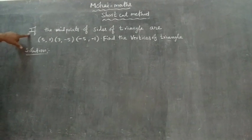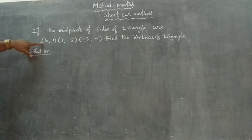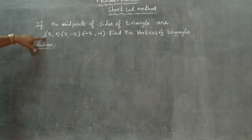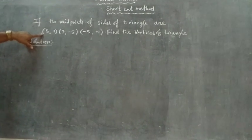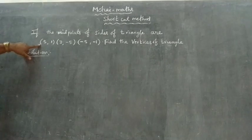The midpoints of the sides of the triangle are (5,1), (3,-5), and (-5,-1). Find the vertices of the triangle.